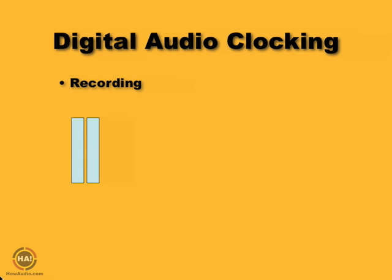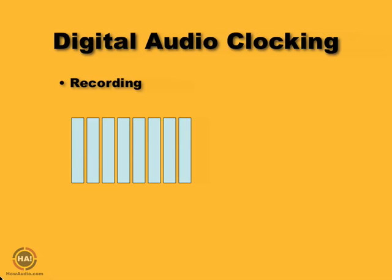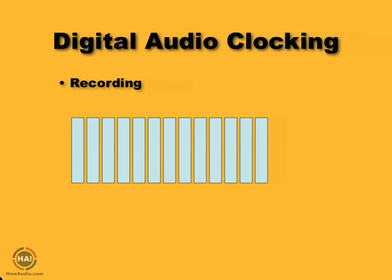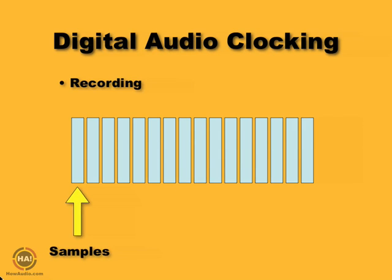In digital recording we're taking snapshots of our audio at a very periodic rate — just taking snapshot after snapshot. Those snapshots are called samples and the rate at which they're taken is the sample rate. For example, an audio CD has a sample rate of 44,100 samples per second. That's a lot of samples.